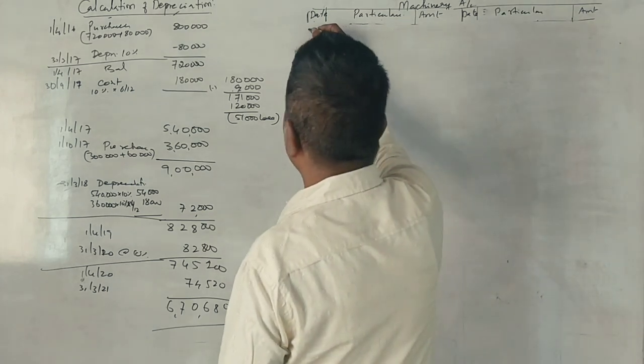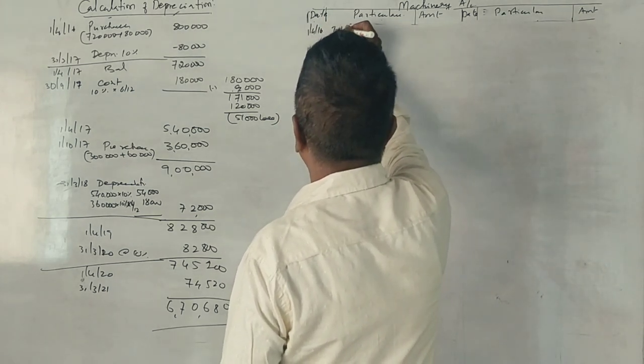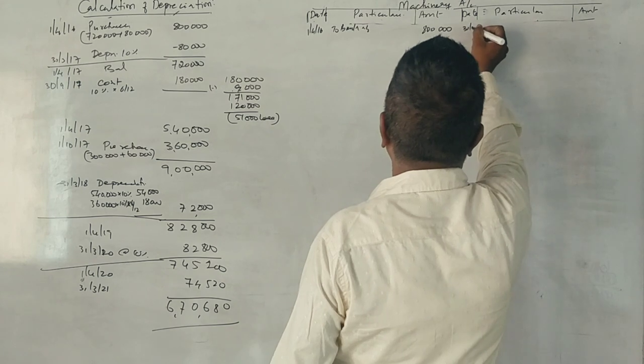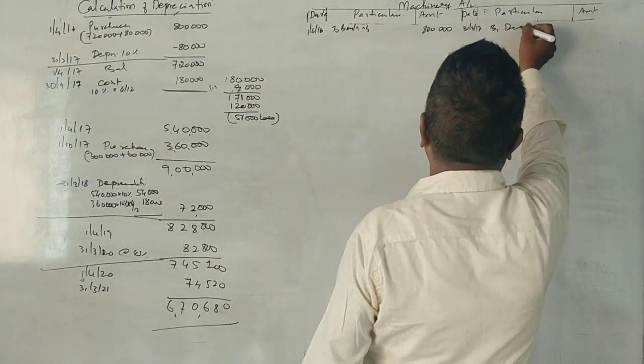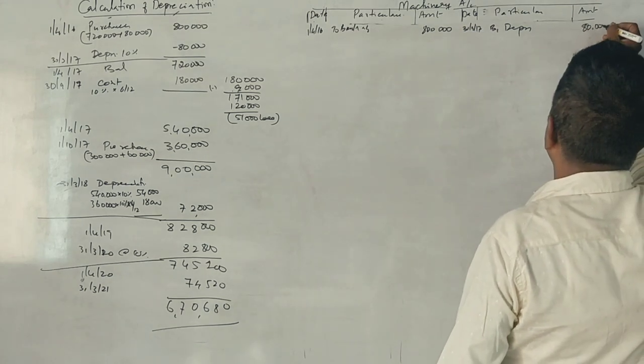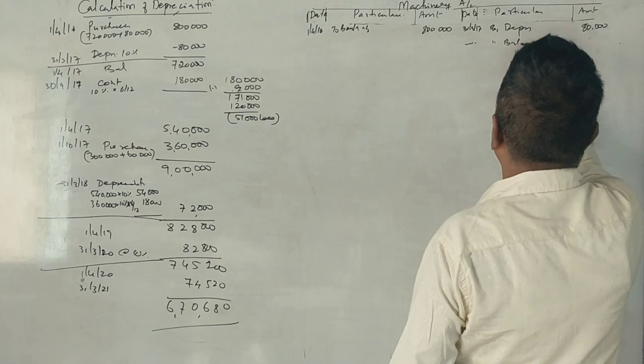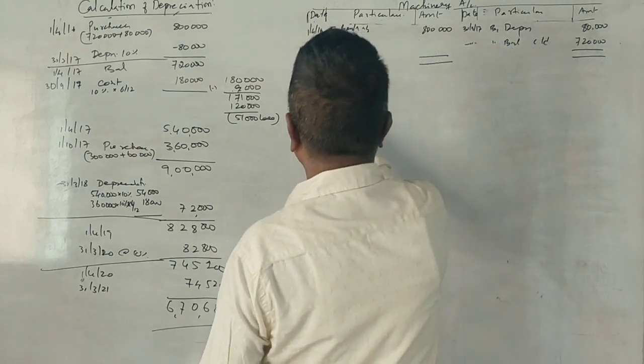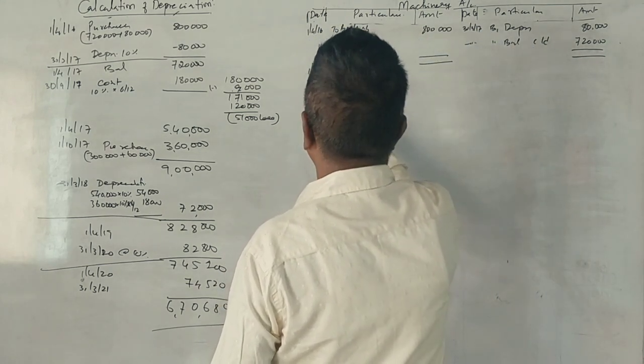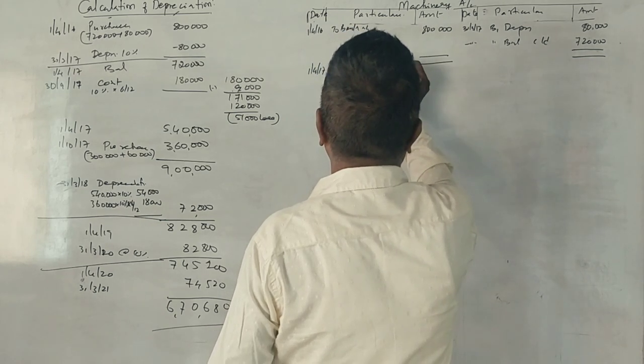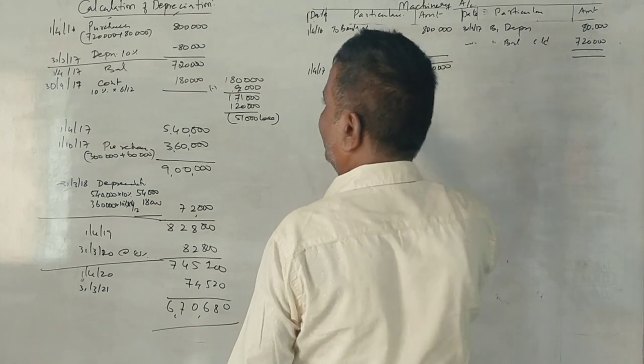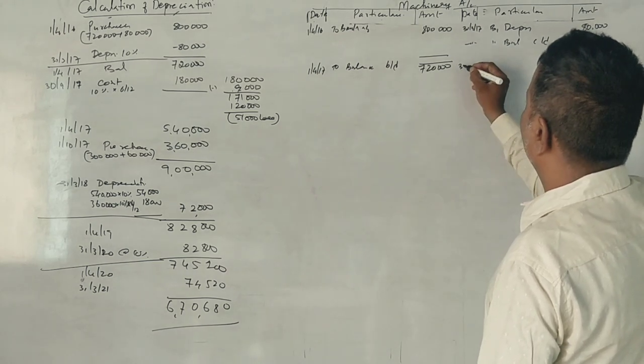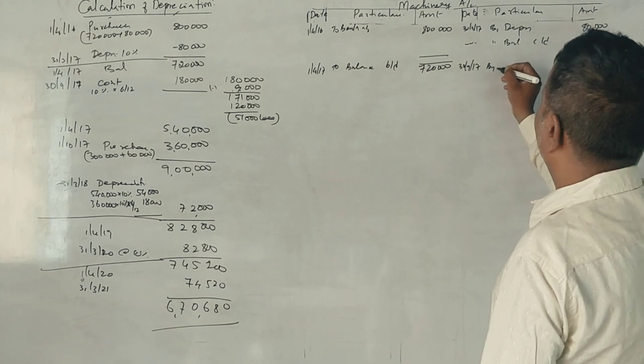I will show the machinery account. 1st April 2016, to bank account $800,000. 31st March 2017, by depreciation $80,000. Balance carried down is $720,000. Second year transaction.